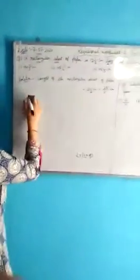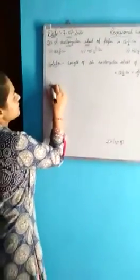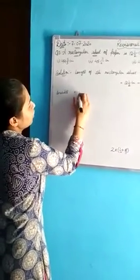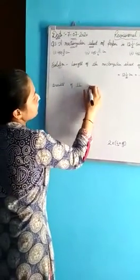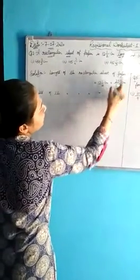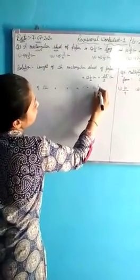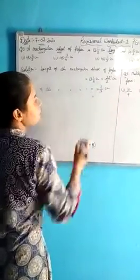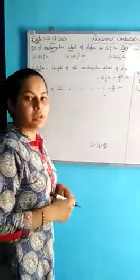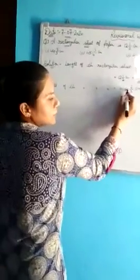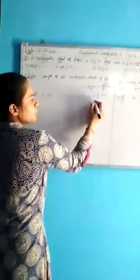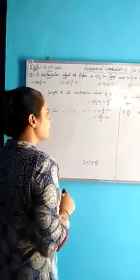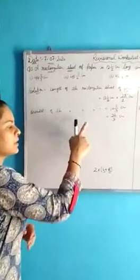Now, breadth or width — both are the same thing. Write here: breadth of the rectangular sheet of paper is 10 and 2/3 centimeters, as given. Convert this mixed fraction into an improper fraction the same way — 10 multiplied by 3 gives 30, then 30 plus 2 gives 32 — so it is 32/3 centimeters. Now this one is the length and this one is the breadth.